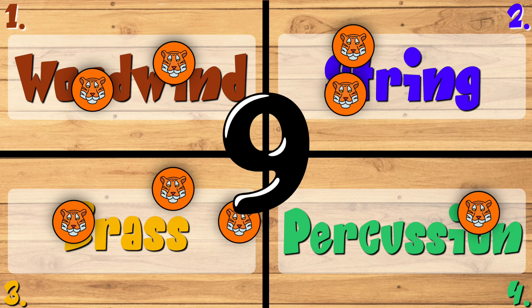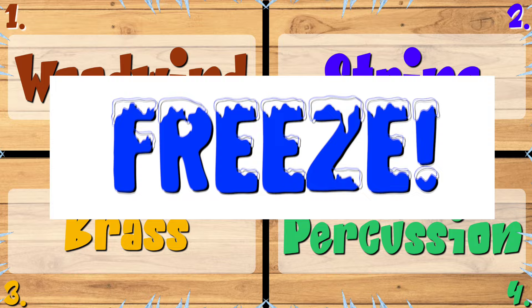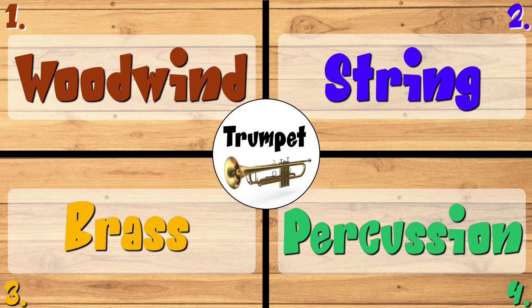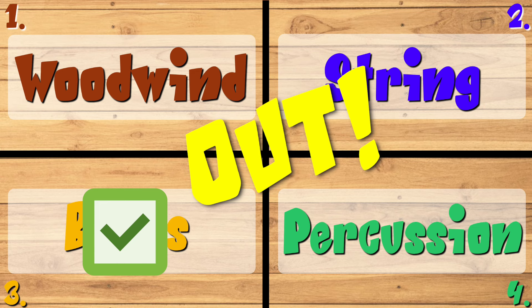Find corner one, two, three, or four. Which family is this instrument a part of? Let's listen again. Show with your fingers the family corner the instrument is in. The trumpet is part of the brass family. So if you are in the brass family corner, sorry, you are out.